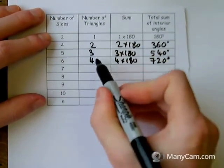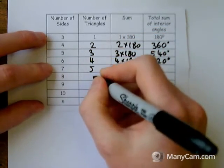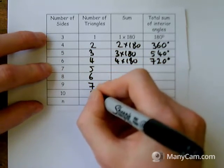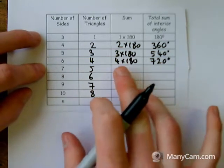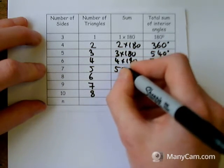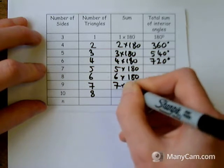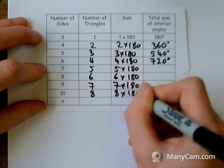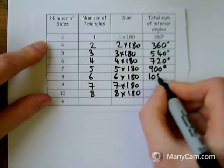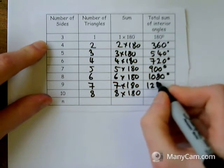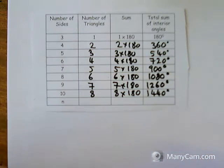Hopefully you can spot a pattern with the number of triangles in a shape — it's going up in ones. So a seven-sided shape would have five triangles, giving five times 180. An eight-sided shape has six triangles — six times 180. A nine-sided shape has seven triangles — seven times 180. And a ten-sided shape has eight triangles — eight times 180. Working these out: 900 degrees for a seven-sided shape, 1080 for an eight-sided, 1260 for a nine-sided, and 1440 degrees for a ten-sided shape.